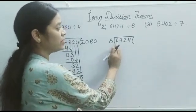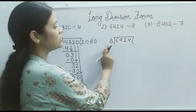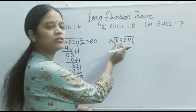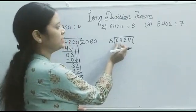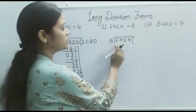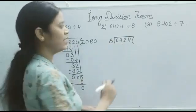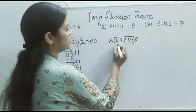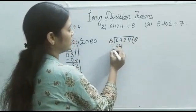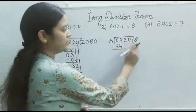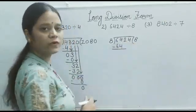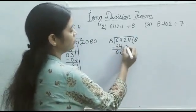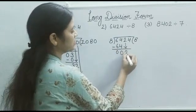First we compare: the first digit of the dividend is smaller than 8. So we combine the first two digits, that is 64. And 64 comes in the table of 8 at 8 times — 8 eights are 64. So we write 64 here. Then 4 minus 4 is 0, and 6 minus 6 is 0. Next we bring down the next digit: 2.